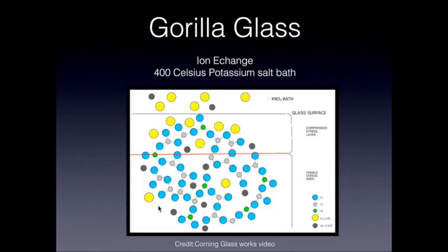Effectively, because potassium is a larger atom than sodium, when this cools it creates highly compressive forces on the surface of the glass and relative tension in the central portion — again creating what's called tempered glass. This really creates the hardness and the scratch resistance of gorilla glass. That's generally how gorilla glass is made.